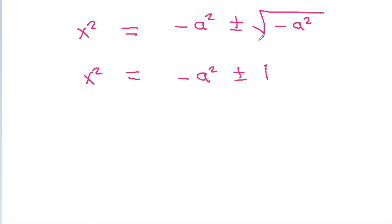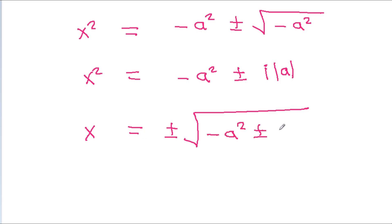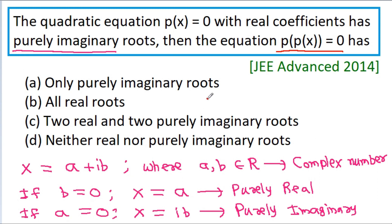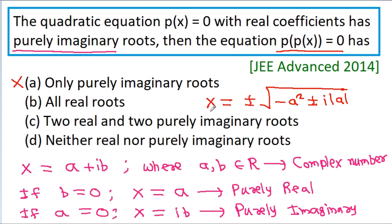Since x² = −a² ± i|a|, the values of x are neither purely imaginary nor real. So option A (purely imaginary) is false, option B (real) is false, and option C (two real and two purely imaginary) is also false. Therefore the correct answer is option D: neither real nor purely imaginary roots.